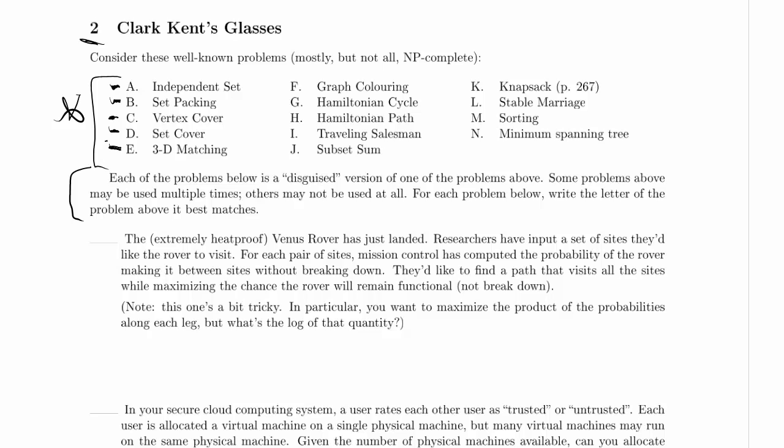3D matching is a problem we will not cover on the exam. Briefly: you're given a number n, you have three sets of items each with size n, and a list of candidate matchings — for example, item 3 from set one, item 1 from set two, and item 7 from set three. The question is: can you choose a subset of candidate matchings so that every item in all three sets is in exactly one matching? It's a bit like stable marriage but with three sets and constrained candidate matchings.